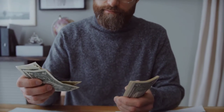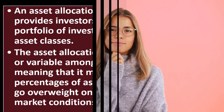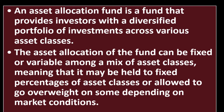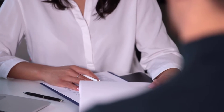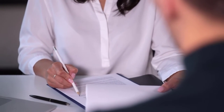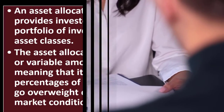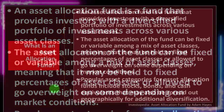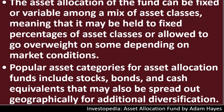Of course you have the question: what kind of rebalancing is that particular fund going to do as the time horizon changes and as you get closer to retirement? They could have a fixed kind of allocation, or the asset classes may be allowed to go overweight on some depending on market conditions, giving a bit more leeway to the fund in those cases.